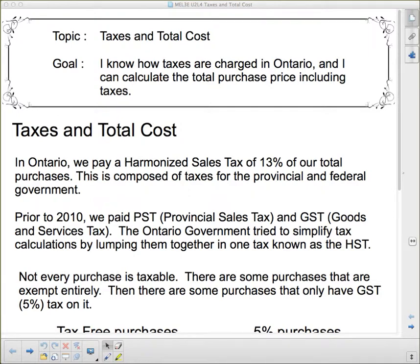We're talking about taxes and total cost, so we'll start by telling you about the sales tax system in Ontario. In Ontario we pay a harmonized sales tax of 13% of our total purchase. This is composed of taxes for the provincial and federal government. Prior to 2010 we paid PST, provincial sales tax, and GST, goods and services tax.